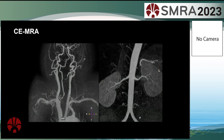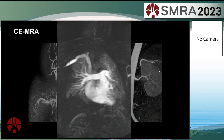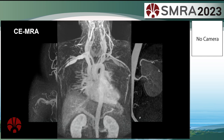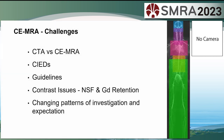Contrast-enhanced MRA is now a robust, mature technology. We can image all body areas, in first pass and dynamically. It looks like a fantastic tool, but what is its current status? It faces many challenges — not least from CT angiography, but also from CIEDs, guidelines, contrast issues, and the changing pattern of investigation and expectation within health services.